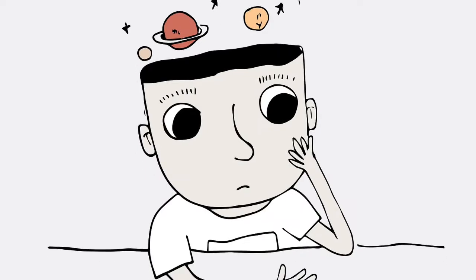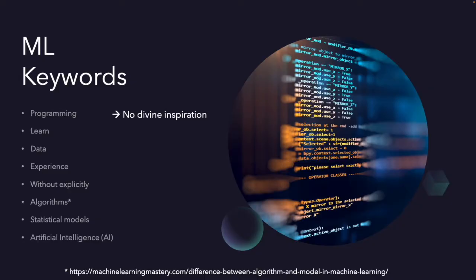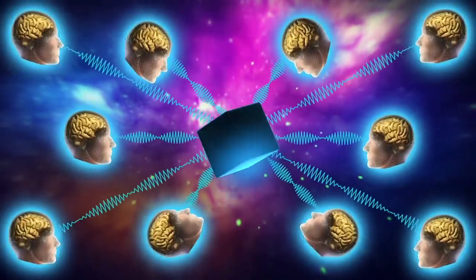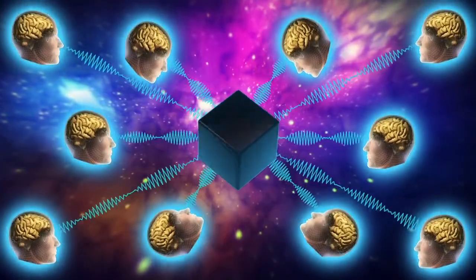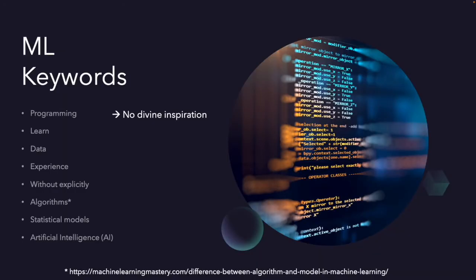Let's think on them one by one. Programming. Programming means machine learning is not a magic, fully autonomous. There is no divine inspiration. A human should give some instructions, should program it, code it.